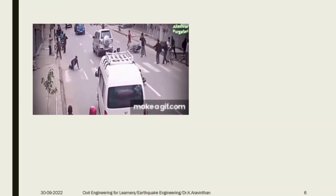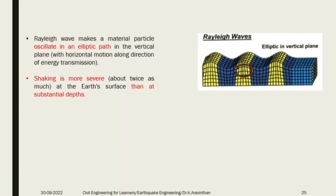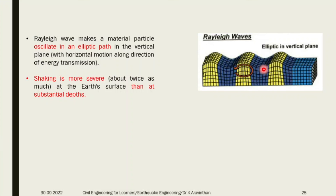Finally, the fourth type of wave is the Rayleigh wave - an elliptical wave. It does not travel horizontally or vertically; it travels in a rotative mode or elliptical direction. The Rayleigh wave makes a particle oscillate in an elliptical path in a vertical plane, not horizontal. Shaking is more severe at the earth surface. If you construct any structure below the earth surface, acceleration below the ground will be much lesser. If you construct above the earth, the acceleration will be twice that at the surface.